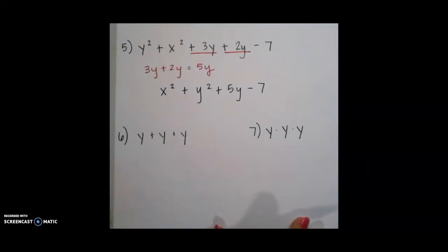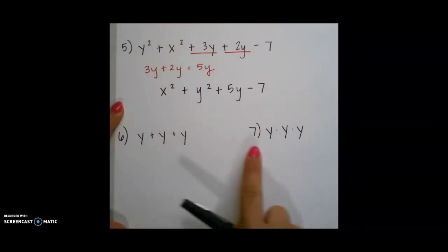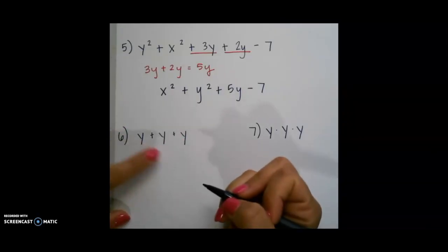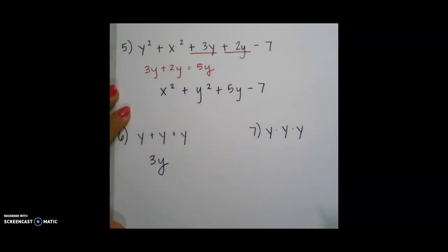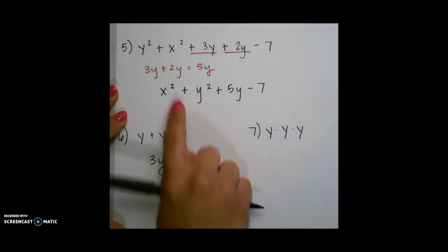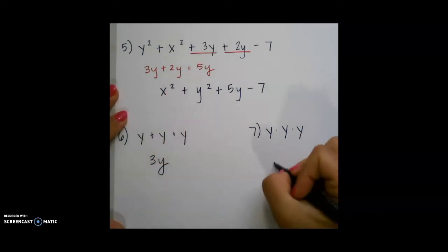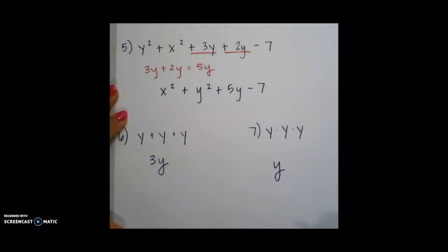The last two examples I want to show you, I want to show the difference between y plus y plus y and y times y times y. Y plus y plus y would simply just be combining three different y's, which would give us 3y. Y times y times y is going to be the use of an exponent. Y would be our term that we are multiplying out, and since I am multiplying it three times, our exponent would be 3.